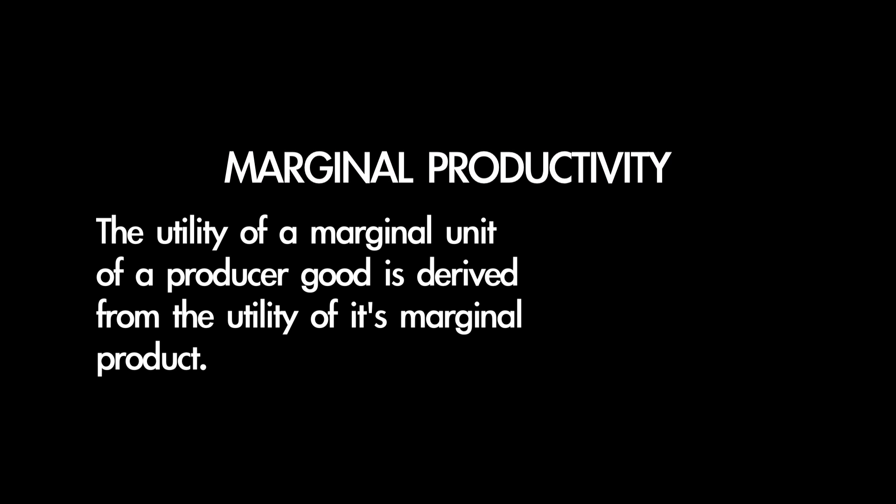Now let's turn to the case of producer goods — means that satisfy ends indirectly. First, we have to acknowledge that there is no way of deriving utility from units of a homogenous producer good because they are not directly consumed. They don't satisfy ends directly, but only contribute to producing a final product which satisfies ends. For example, while we can say that the marginal utility derived from Jerry's televisions each serve a lesser desired end, we couldn't say that Jerry derives a constantly diminishing utility from a power supply of one of his televisions, because Jerry isn't directly consuming the power supply. To determine the value Jerry derives from a power supply, we need to consider how much value Jerry would be losing if he had to buy a television with no power supply. The value of each marginal unit of power supplies would be equal to the end satisfied by the marginal unit of one of Jerry's televisions. The utility of a marginal unit of a producer good is derived from the utility of its marginal product. The value Jerry is getting from a unit of power supplies is called its marginal productivity.